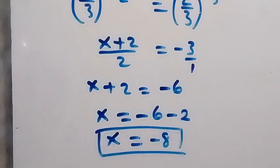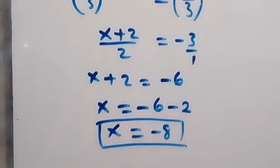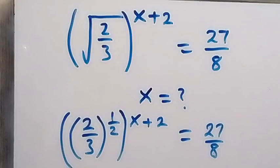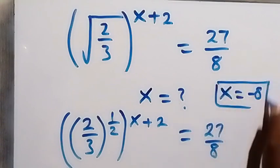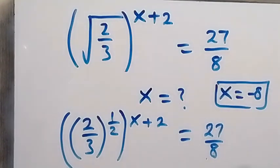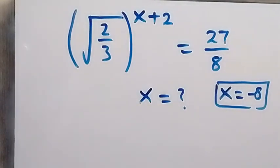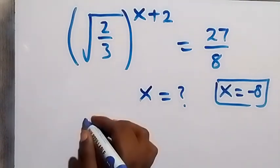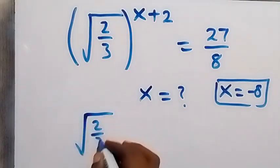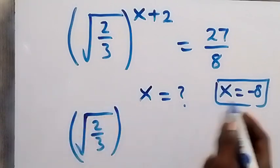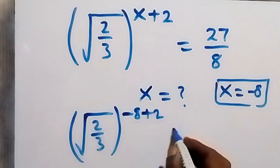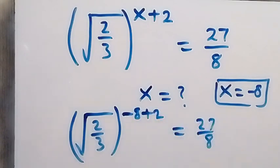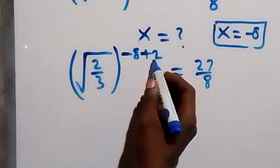We have x equals minus 8. Let's verify by substituting x equals minus 8 back into the original problem. We get the square root of 2 over 3, raised to power minus 8 plus 2. That gives us minus 8 plus 2 equals minus 6, so we have 2 over 3 raised to the power of half, multiplied by minus 6.